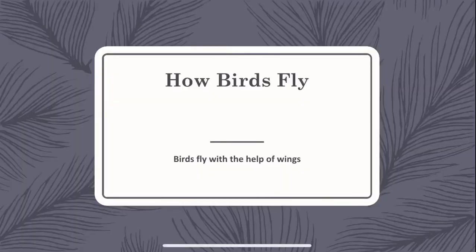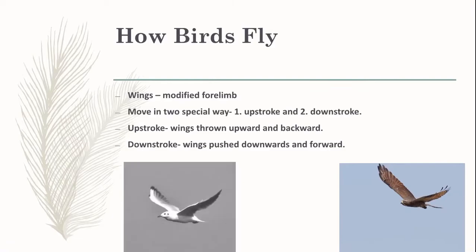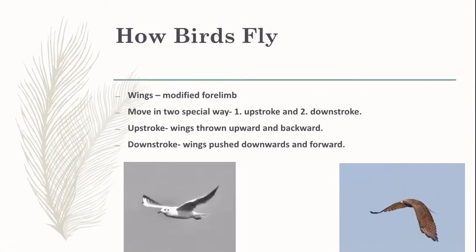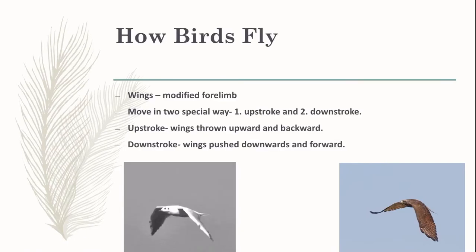How do birds fly? We all know birds fly with the help of wings. Wings are the modified forelimbs — forelimb means front limbs. They move in two special ways called upstroke and downstroke.